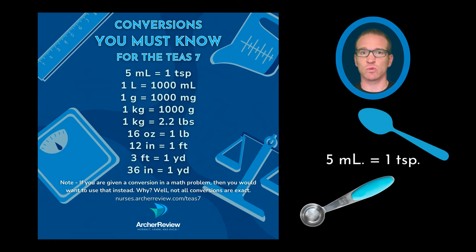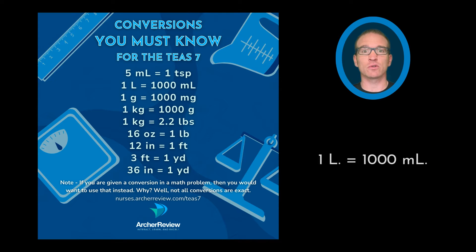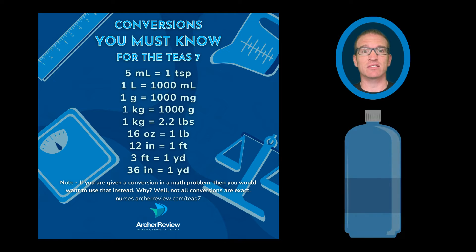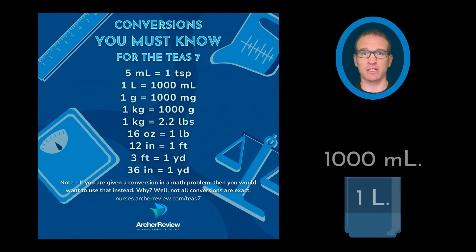Five milliliters equals one teaspoon — that is not a lot of liquid. One liter equals one thousand milliliters. To visualize a liter, imagine taking a two-liter bottle of soda and cutting it in half. That is one liter, which is a thousand milliliters.